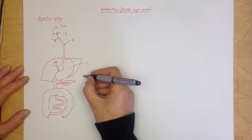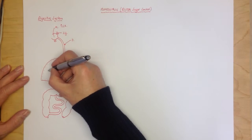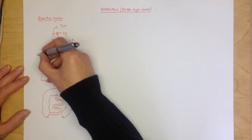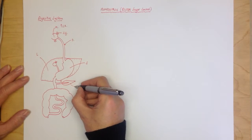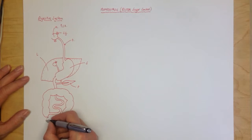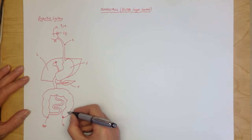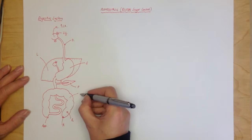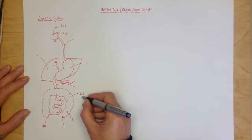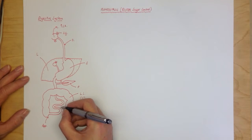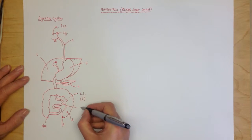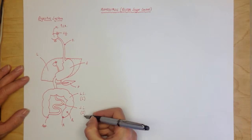This is the stomach. The structure here is the liver. The structure here is the pancreas. This is the appendix. This is the anus. This is the rectum. This is the large intestine, sometimes called the colon. This is the small intestine, sometimes called the ileum.